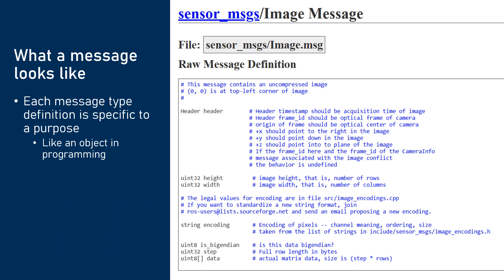Now, we're not getting into the technical details of how to use ROS in this series, but this is generally what a message looks like. A message is a collection of data fields. In this example, you've got an image with a header containing some metadata, height and width information, and then the actual data itself — it's like an object in programming.